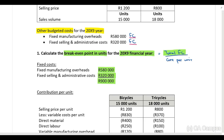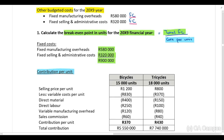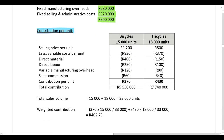Total fixed costs come to 900,000 rand. We now need to calculate the contribution per unit. Remember, contribution per unit equals selling price per unit minus variable cost per unit. All of this information was provided in the question, so take the selling price per unit, deduct all variable costs, and calculate the contribution per unit for each product.